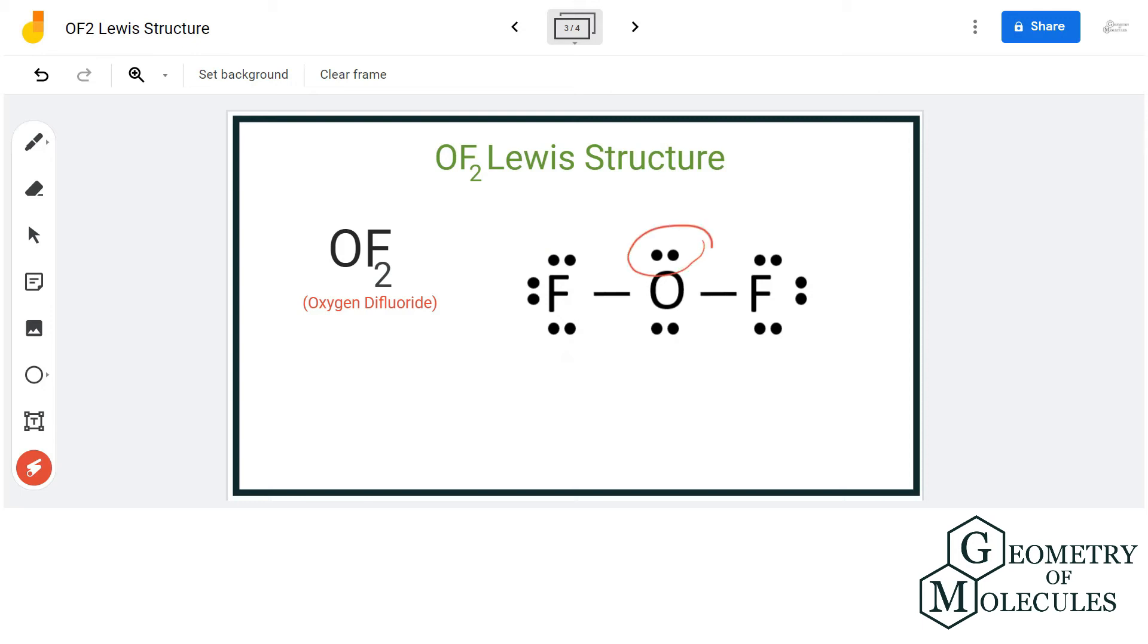So if you see here, the octets of both these fluorine atoms is now complete because both of them have eight valence electrons in its outer shell after sharing one valence electron of the oxygen atom. But oxygen here is left with two lone pairs of electrons which are not participating in any bond formation.